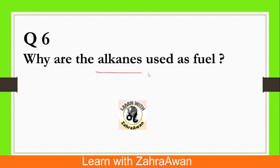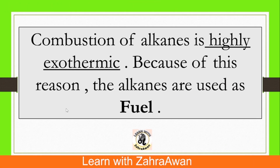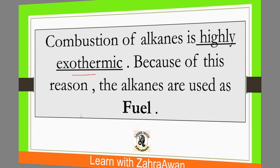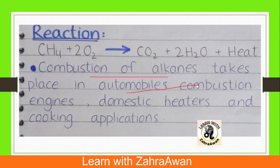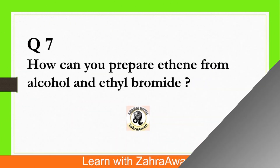Question number 6: Why are alkanes used as fuel? When we burn alkanes through combustion, it is a highly exothermic reaction — meaning energy is released. We use this exothermic reaction as a fuel source. For example, when methane undergoes combustion, carbon dioxide and water are produced along with heat energy. Alkanes are therefore used in cars, engines, heaters, and for cooking.